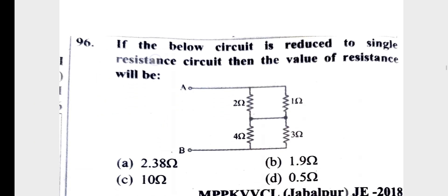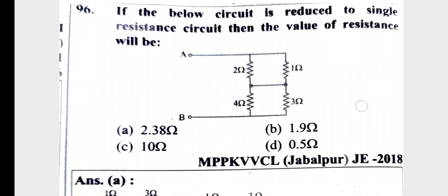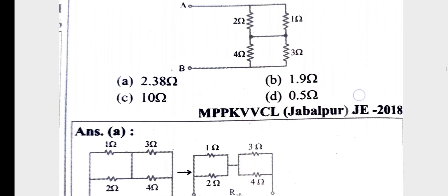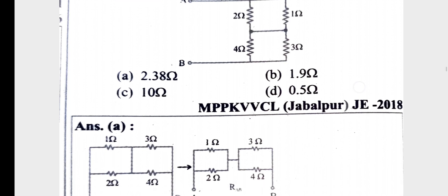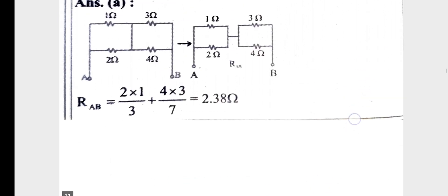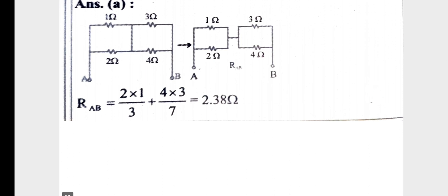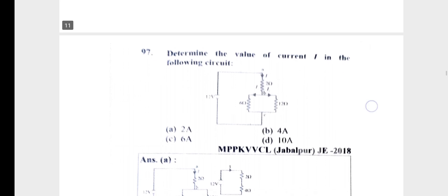Now we are going to cover Kirchhoff's Laws — the nodal equations and node analysis — along with theorems. The circuit below is to be reduced to a single equivalent resistance. RAB is calculated: 2 into 1 divided by 2 plus 1 equals 2/3 ohm for one combination, then combined with 1 ohm and 2 ohm in the circuit, giving total values through reduction steps including 3 ohm and 4 ohm branches.